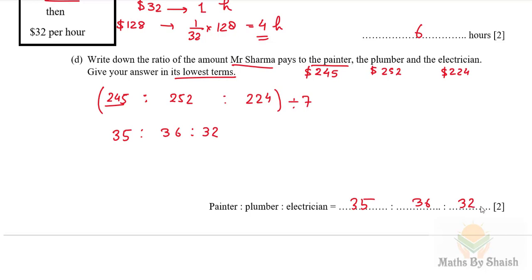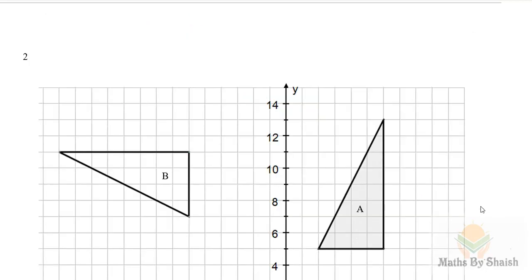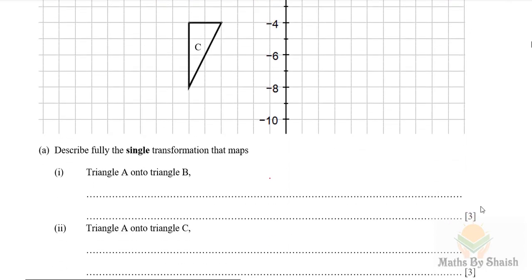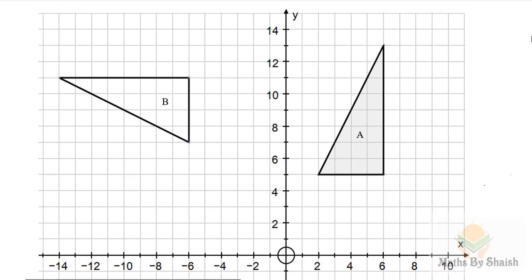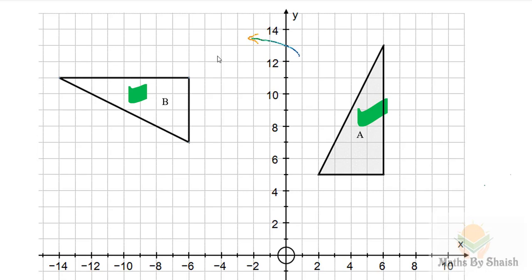Question two is a transformation question. Part A asks to describe fully the single transformation that maps triangle A onto triangle B. Looking at the triangles, it is a rotation — anti-clockwise — of 90 degrees, since a vertical line in triangle A corresponds to a horizontal line in triangle B.